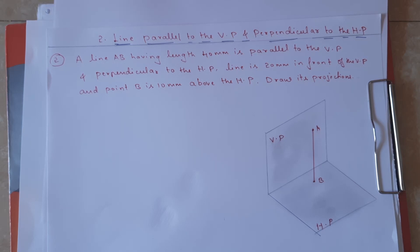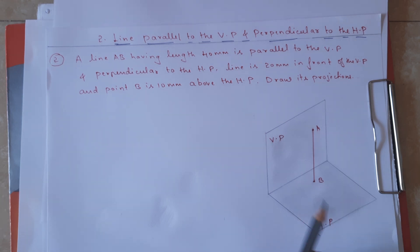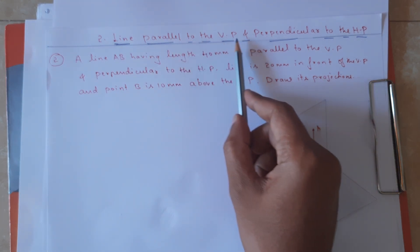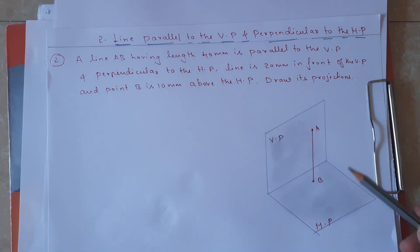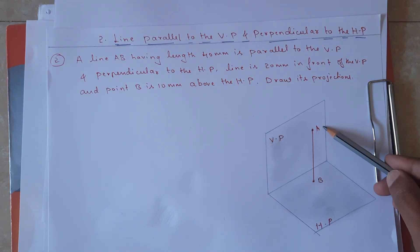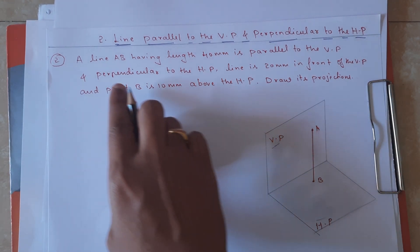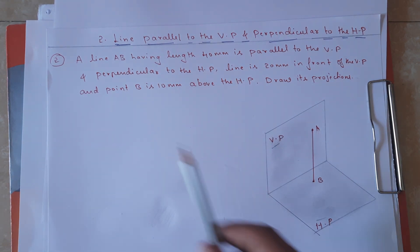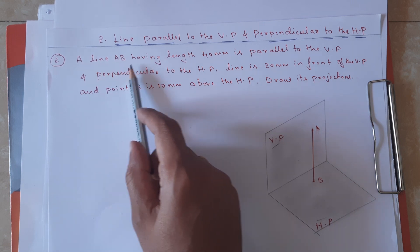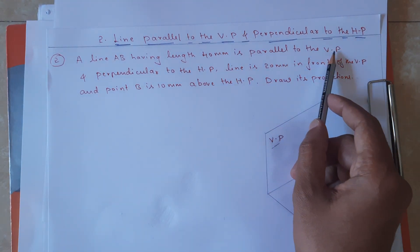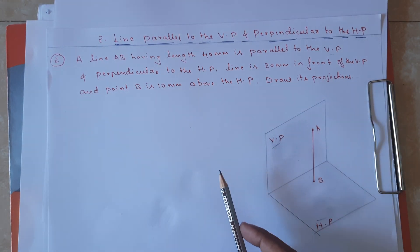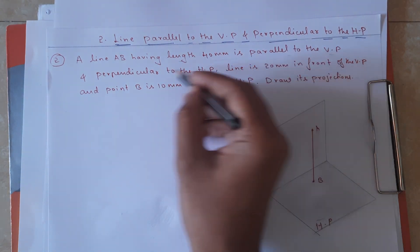Hello friends, namaste, welcome to the class on engineering drawing. Today we are going to solve the second variety of problems on projections of lines. The second variety is where the line is parallel to VP and perpendicular to HP. Consider a problem: a line AB having length 40mm is parallel to VP and perpendicular to HP.